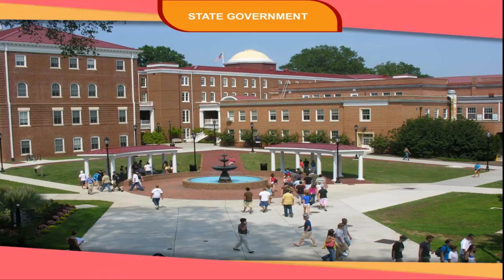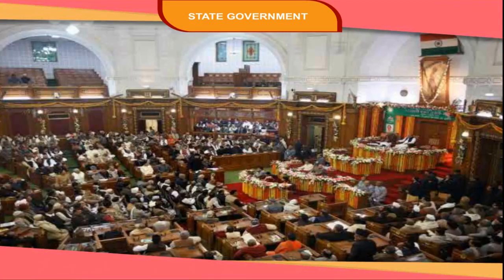The remaining one-sixth are nominated by the Governor of the state. These nominated members are distinguished individuals from different walks of life like arts, science, literature, music, social work, etc. The members of the Legislative Council elect a chairman and deputy chairman from amongst themselves. The chairman is the presiding officer in the House and the deputy chairman conducts the proceedings in his absence. They remain in office as long as they enjoy the confidence of the majority and can be removed from office by a resolution passed by the majority.